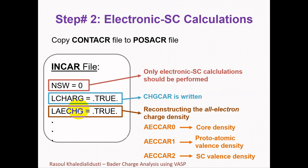We also need to turn LAECHG on by setting this tag to True. By turning this tag on, VASP will reconstruct the all-electron charge density on the so-called fine fast Fourier transform grid. For LAECHG=True, VASP will reconstruct three distinct all-electron charge densities.